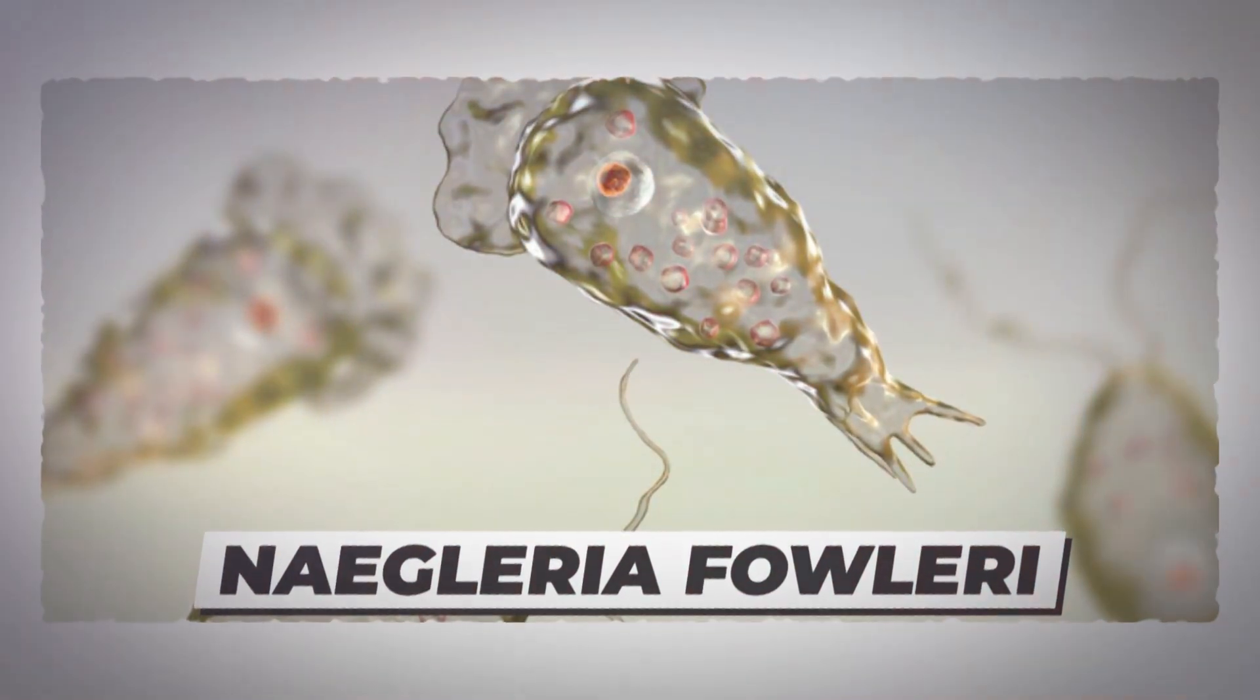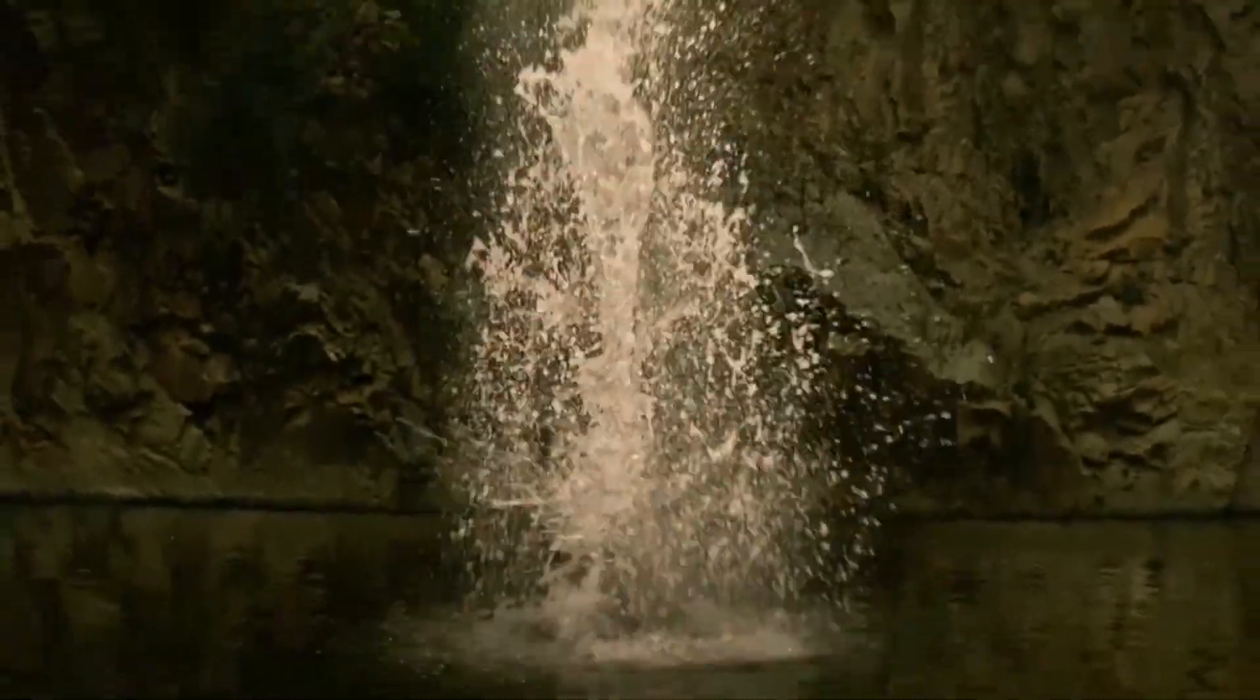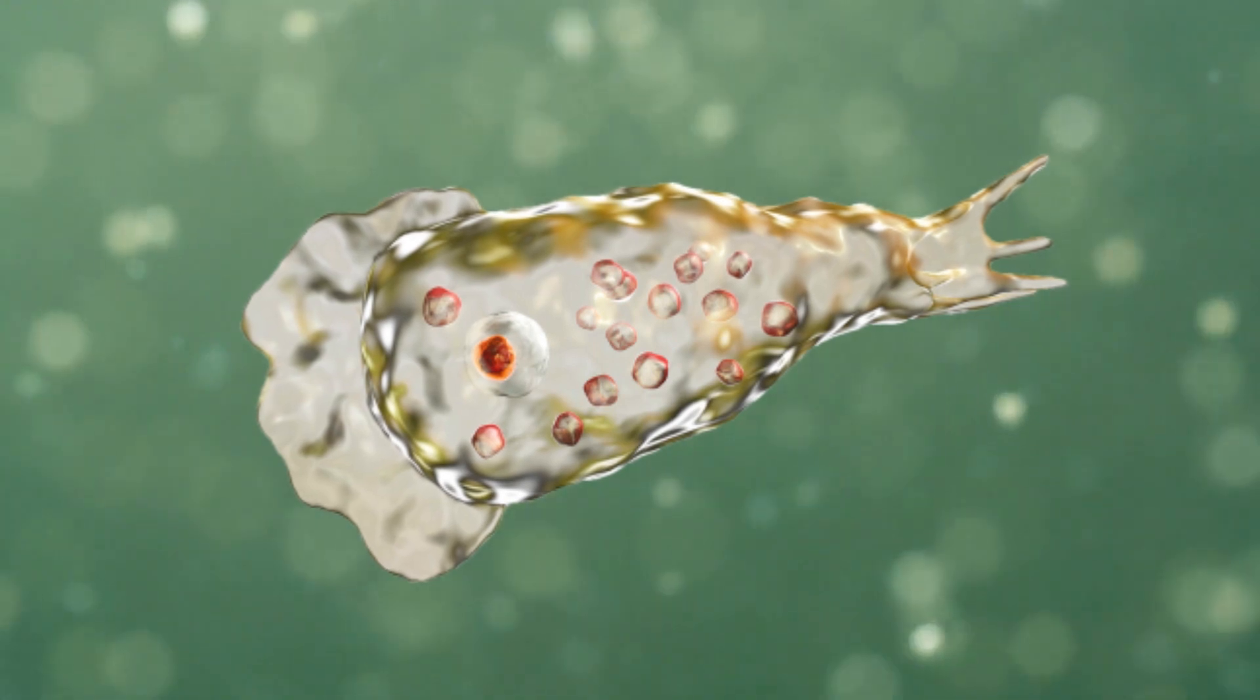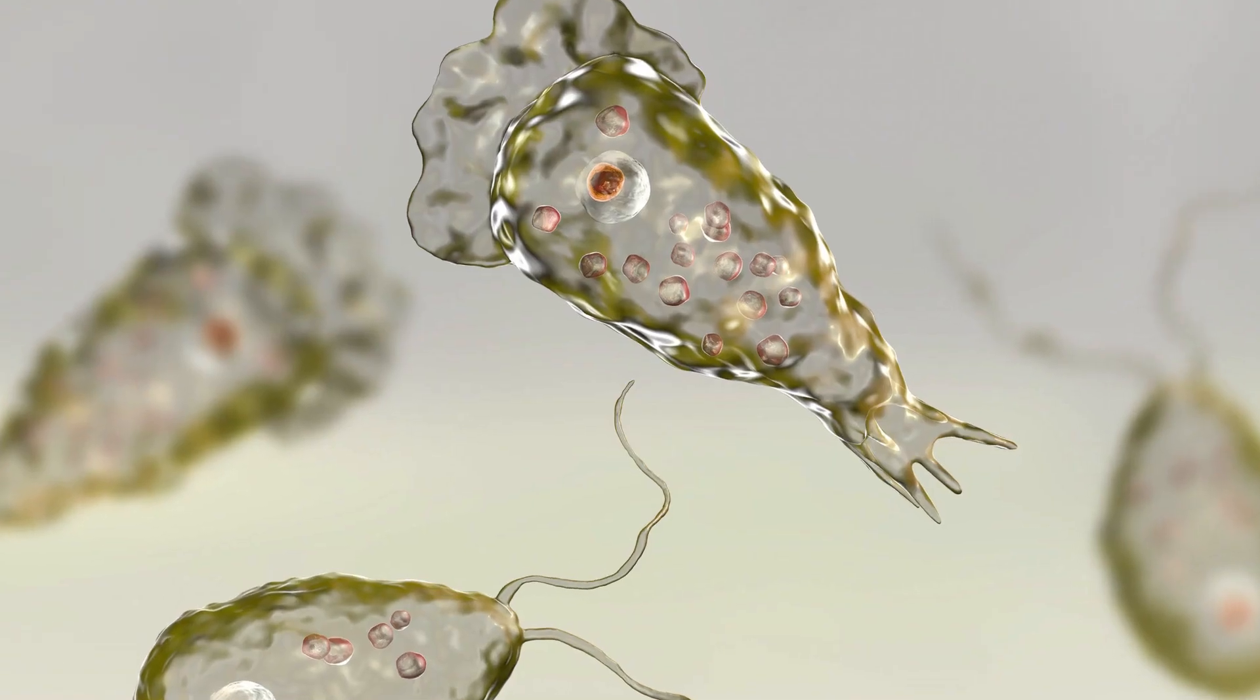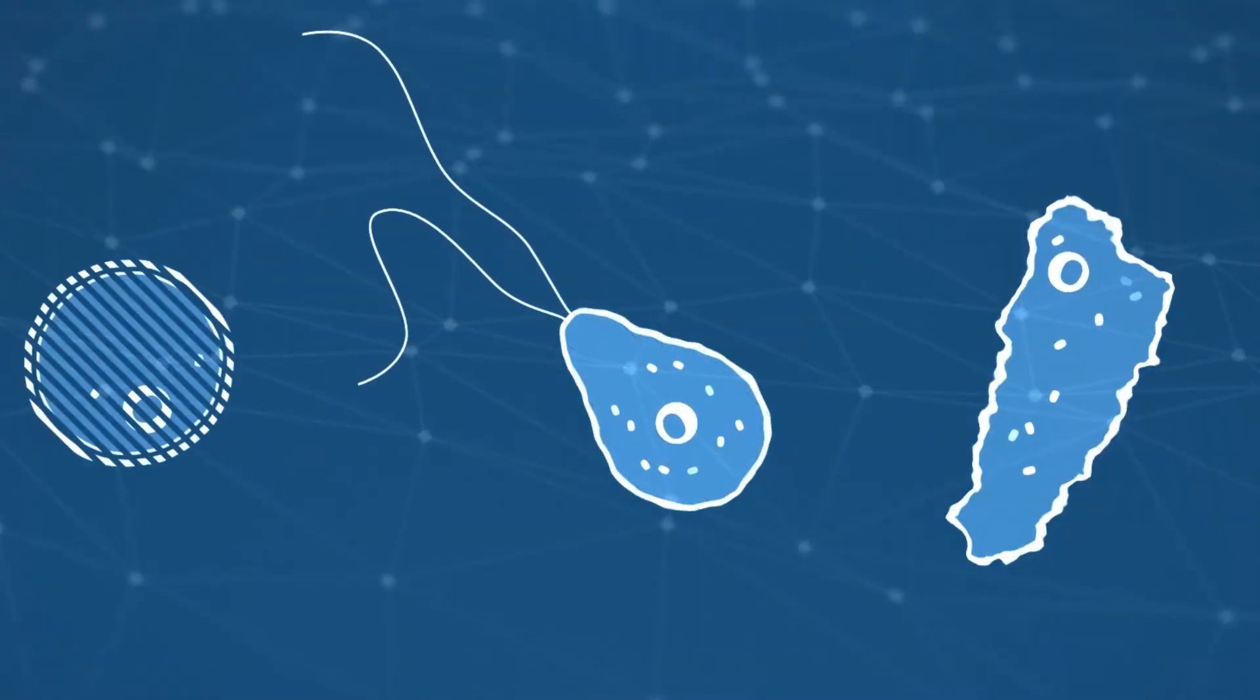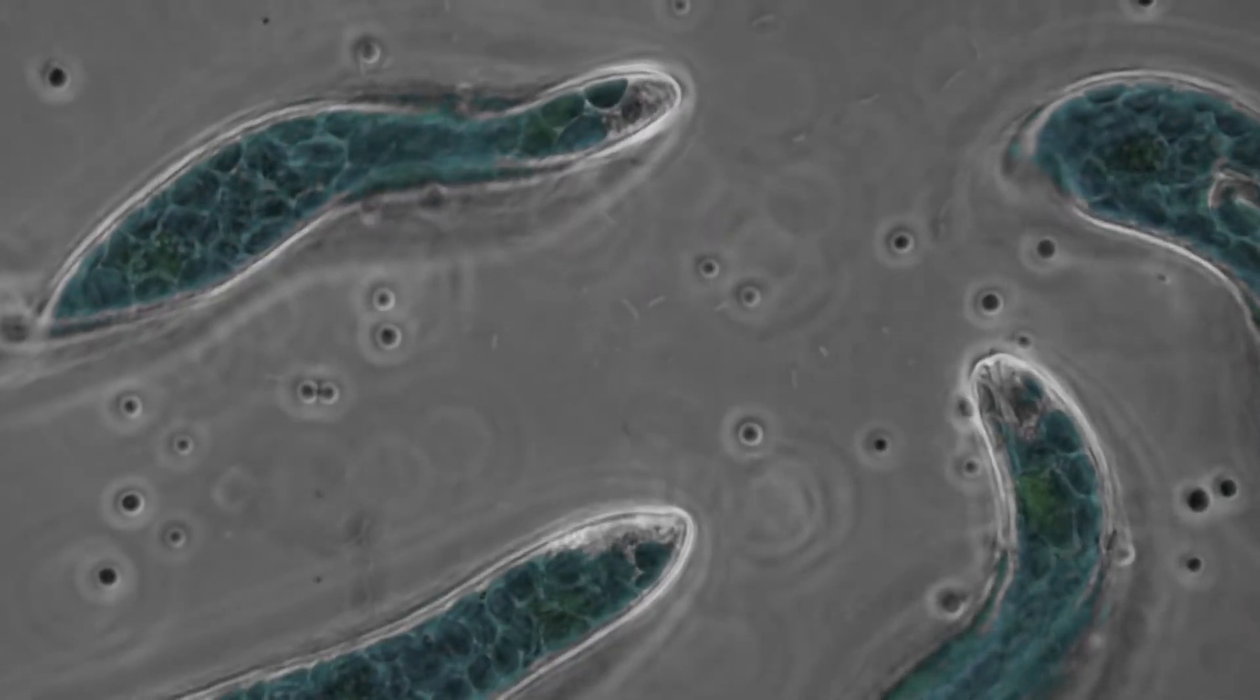Number 6, Naegleria fowleri. Once you hear about this, we guarantee you'll think twice before jumping into a lake. This parasite usually lives in warm, freshwater bodies such as lakes and rivers. The Naegleria fowleri, or brain-eating amoeba, is an incredibly rare but equally scary parasite. The parasite lives in warm bodies of fresh water, such as lakes, where it feeds on the bacteria in the sediment.